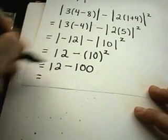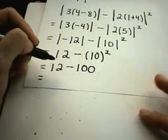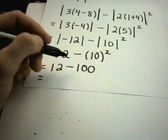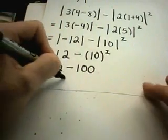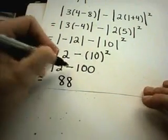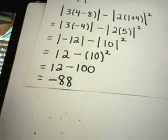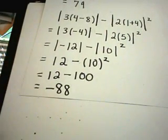So, 10 times 10 is 100. And now, at this case, I get 12 minus 100. What is that? I think about it as being 100 minus 12, which is 88. But since it's 12 minus 100, I'll get negative 88 as my solution.